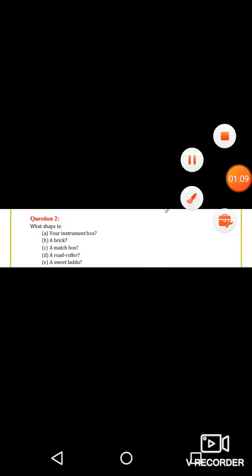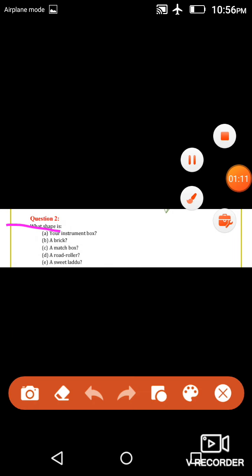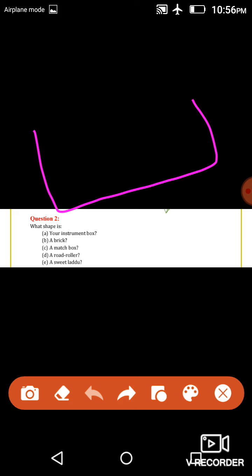Question number 2: What shape is your instrument box? The instrument box is cuboid shape. What shape my dear? Cuboid. Next is a brick - brick is also a cuboid. A match box is also cuboid shape.